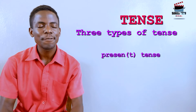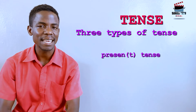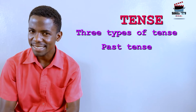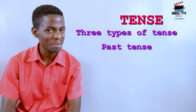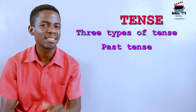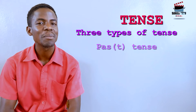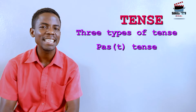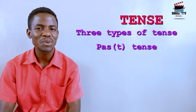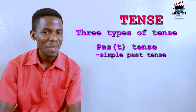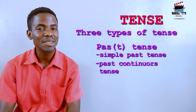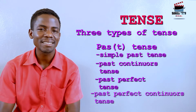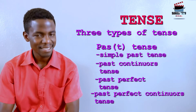Similarly, past tense: 'past' ends with T and 'tense' starts with T, so there is a silent T — we say 'past tense.' Past tense is also divided into four main categories: simple past tense, past continuous, past perfect tense, and past perfect continuous.